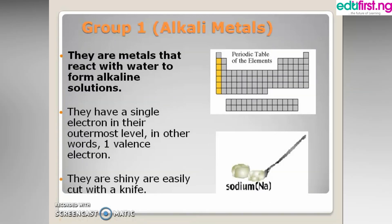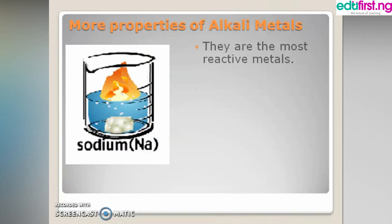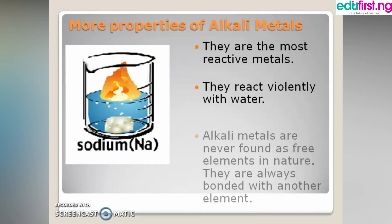Group 1 elements are called alkali metals. Some of their properties are: they are metals that react with water to form an alkaline solution. Secondly, they have a single electron in their outermost shell, also called the valence electron. So all elements in this group have one electron in their last shell.